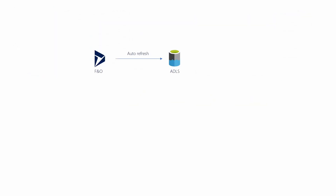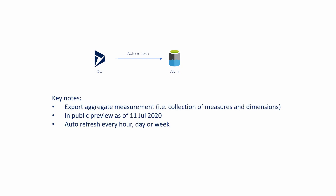How it works is this: we have a Finance and Operations instance and it will automatically refresh some data into Azure Data Lake Gen2. The data being exported is not an entity or table — it's what they call aggregate measurements, which is effectively a collection of measures and dimensions. Measures are things like total sales or number of items, and dimensions are things like customer, product, or country.